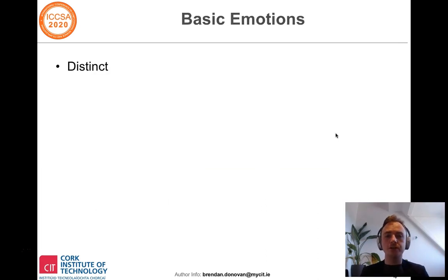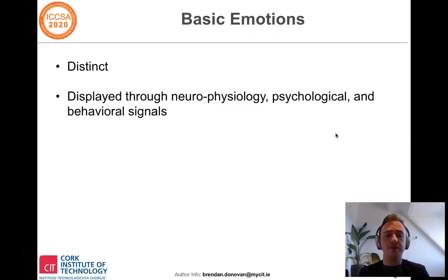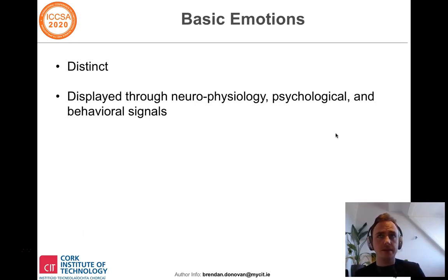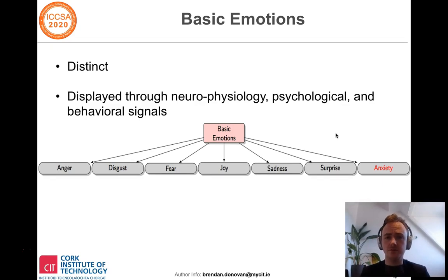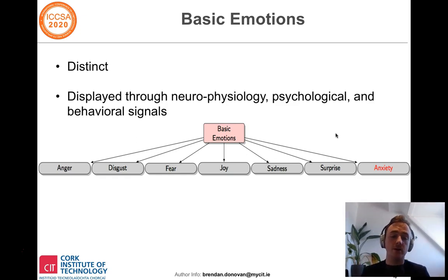In terms of emotions, we looked at the basic emotions, which are a set of emotions that are distinct and are reliably displayed through neurophysiological, psychological, and behavioural signals, making them easy to detect. We considered the canonical six basic emotions that emotion theorists and researchers typically agree on: anger, disgust, fear, joy, sadness, and surprise.